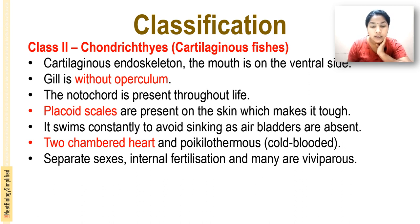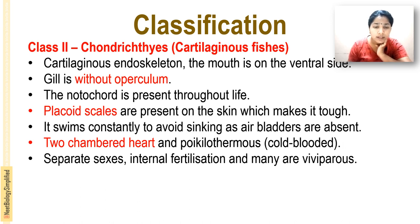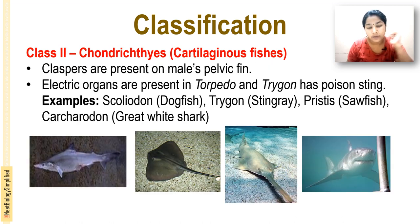Chondrichthyes swim constantly to avoid sinking because air bladders are absent. They have a two-chambered heart and are poikilotherms — that is cold-blooded animals. They have separate sexes, internal fertilization, and many are viviparous. So: cartilaginous endoskeleton, mouth on ventral side, gills without operculum.